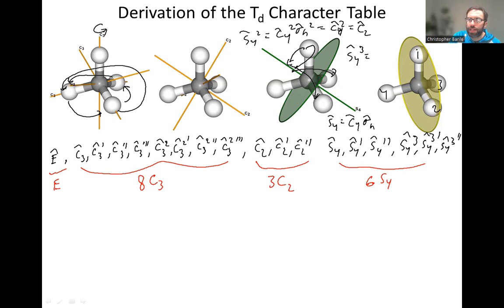So this mirror plane contains, they all are going to contain the central atom, the carbon. This mirror plane contains atoms one and two. So one and two, and the central carbon aren't going to change because they're in the mirror plane, but four and three are going to switch places. So you can have on the mirror plane, that's one, two, we could call that sigma D one, two.